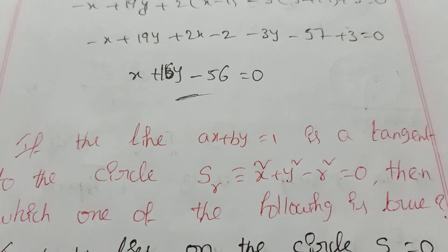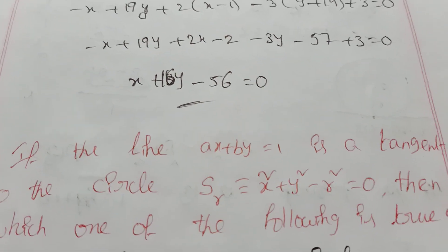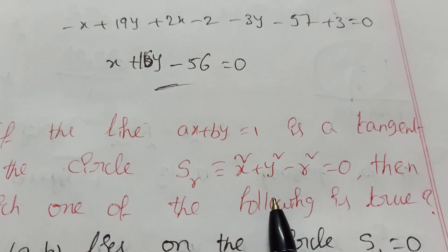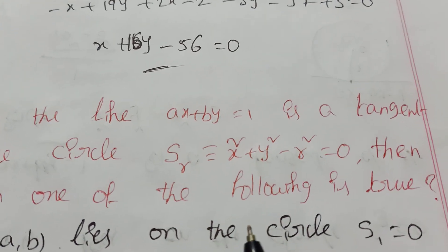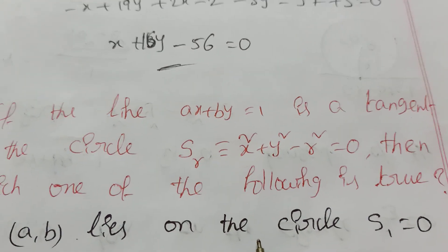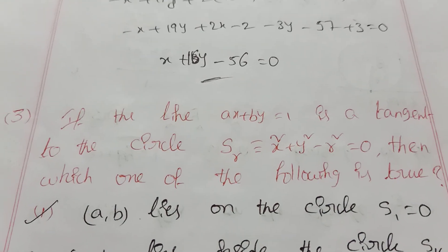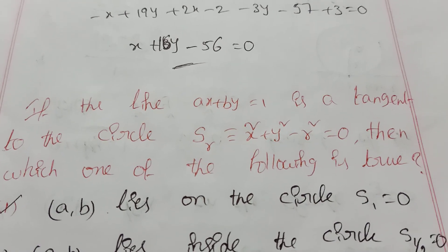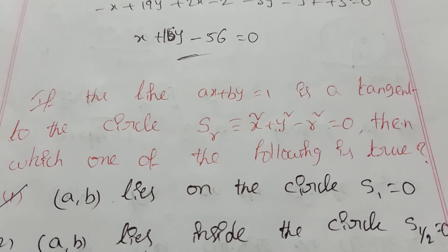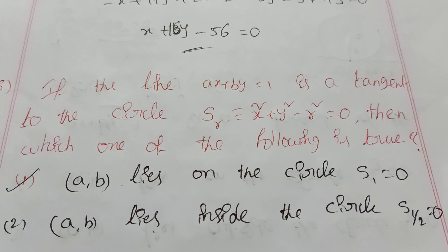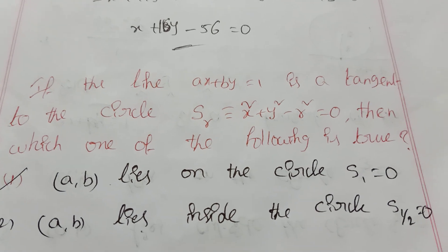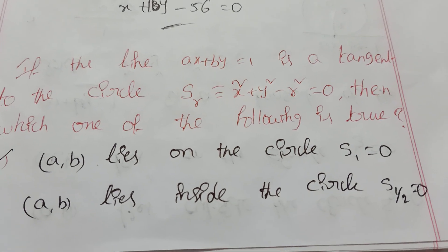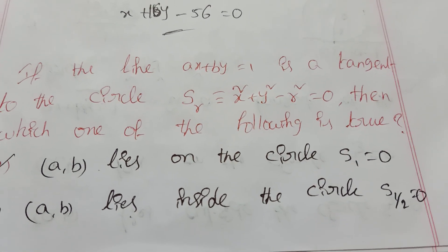The answer is: (a, b) lies on the circle s₁ = 0. This is a simple question based on the tangent condition r = d. This question was also from last year. Practice these concepts and share this video with your friends. Thank you for watching.